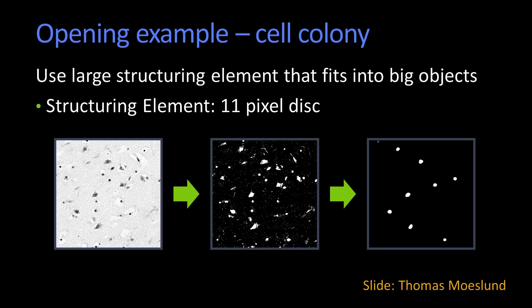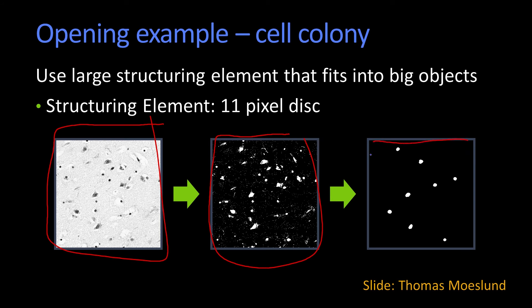So here, thanks to Thomas Moselun at Aalborg, we have an original image of some cells that are growing. Here is a binary image, and this is the opening using an 11-pixel disk. You can see that it pulls out these cells pretty well. Looking at the result: it's got that one, it's got that one, it's got that one, it's got that one, it's got that one, it's got that one, it's got that one, it's got that one.